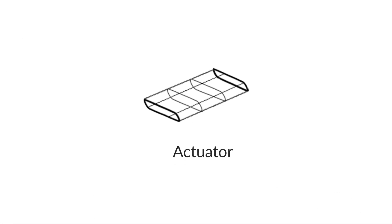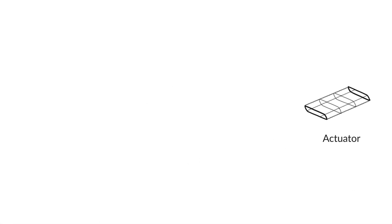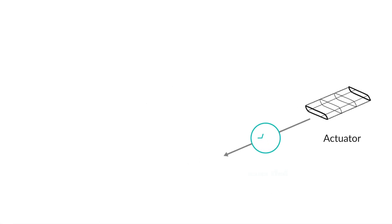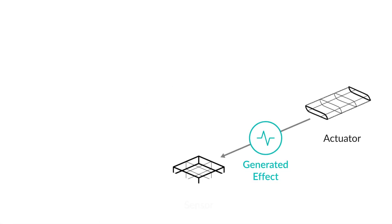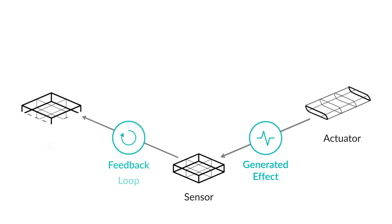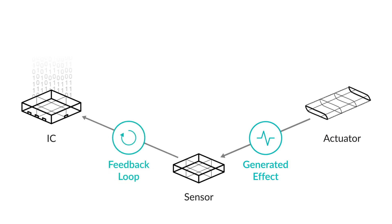With Active Sensing Technology, once the actuator generates the effect, a sensor measures and captures the actuator's acceleration data for every millisecond of movement. The sensor sends the data to the IC, which uses a smart algorithm to compute the exact strength needed.